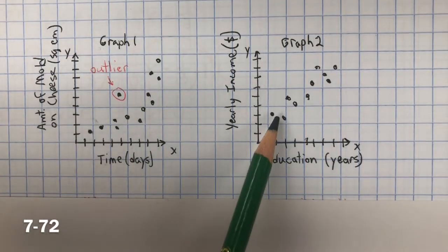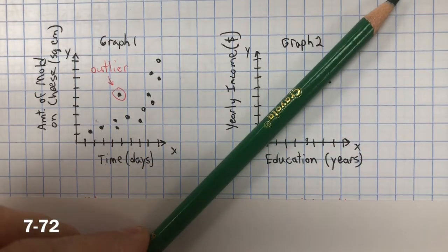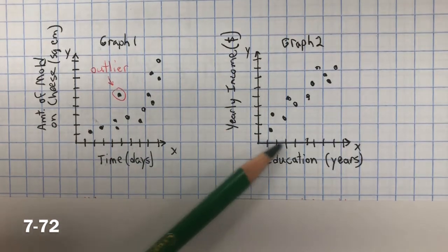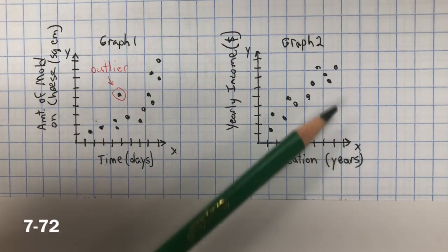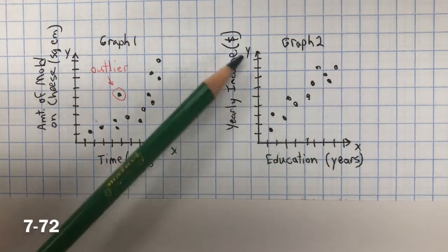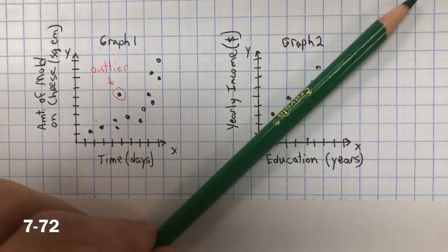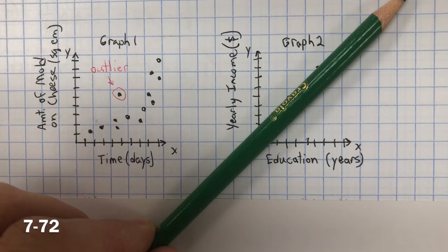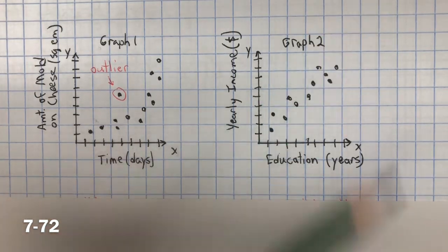In graph two, you can see that it's more linear. As your income increases, your education increases as well. So the more education you have, the more likely you're going to make more money. They're both increasing, so you have positive and positive. And this one is more linear. So you would say this is a positive association that's linear, a linear positive association.